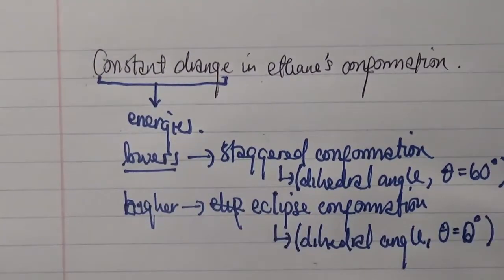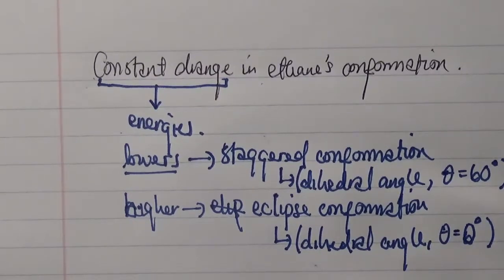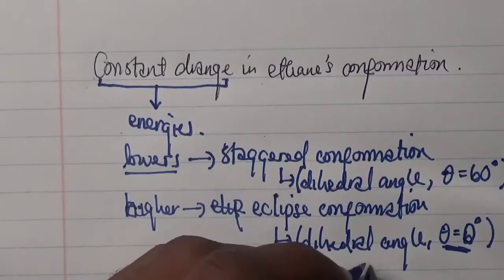In here, the eclipsed conformation will have some interaction of the electrons when the front and the back C-H bonds are aligned at this particular angle here. Therefore, this generates an energy increase.